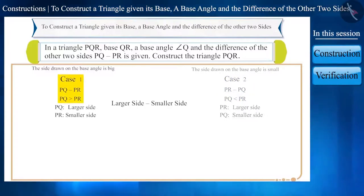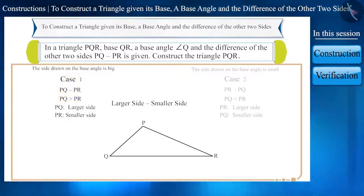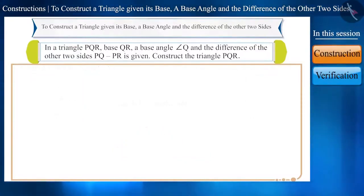In this video, we will learn the construction with the information given in case 1. Then suppose that we want to construct the triangle PQR, where the base side is QR, the information about PQ minus PR is available, and the measure of angle Q is known. And the steps for the construction of such a triangle are as follows.